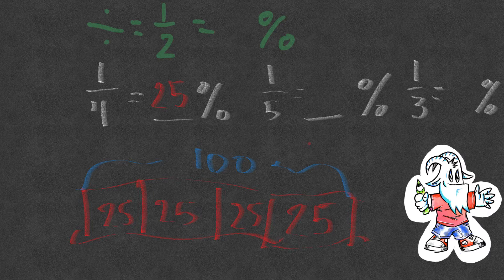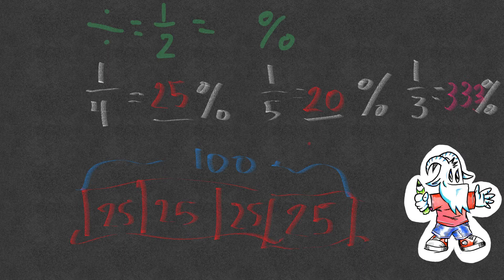What would 100 divided into five equal parts be? Well, 20 — five groups of 20 make 100. And finally one third — that's a tricky one, because three times 33 is 96, so 33.3 is the equivalent of a third. So to review: one quarter is the same as 25%, one fifth is 20%, and one third is 33.3% recurring.